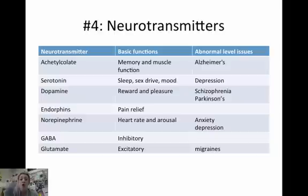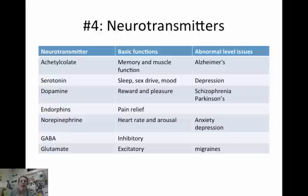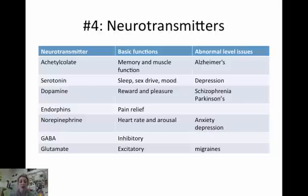Some people with schizophrenia who take meds have Parkinson's-like symptoms because the medication stops the dopamine. Endorphins are for pain relief. Norepinephrine controls heart rate and arousal — alertness arousal — and anxiety involves an increased level of norepinephrine. GABA is an inhibitory neurotransmitter that stops messages. Glutamate is excitatory, and an excess of glutamate can be related to migraines.